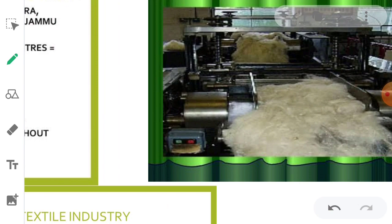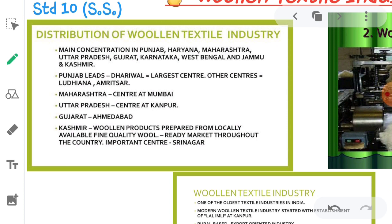The woolen textile industry is mainly concentrated in Punjab, Haryana, Maharashtra, UP, Gujarat, Karnataka, West Bengal and Jammu and Kashmir. Punjab leads with Dharwal as the largest center; other centers are Ludhiana and Amritsar. Maharashtra center is at Mumbai, UP center at Kanpur, and Gujarat at Ahmedabad. Kashmir woolen products prepared from locally available fine quality wool have a ready market throughout the country; the important center is Srinagar.